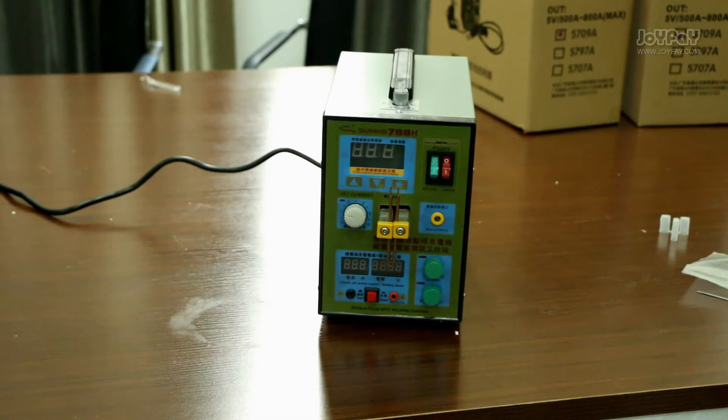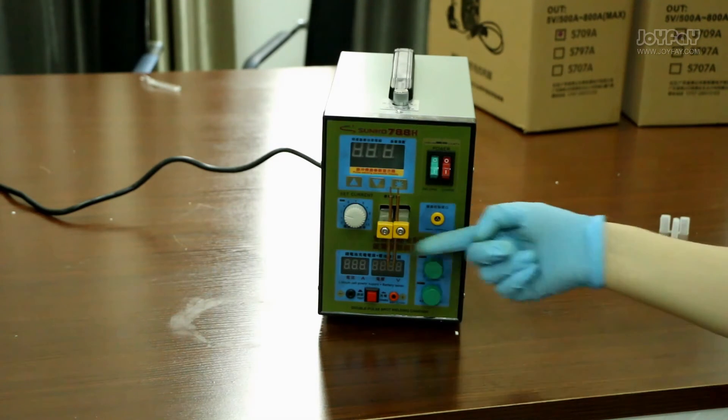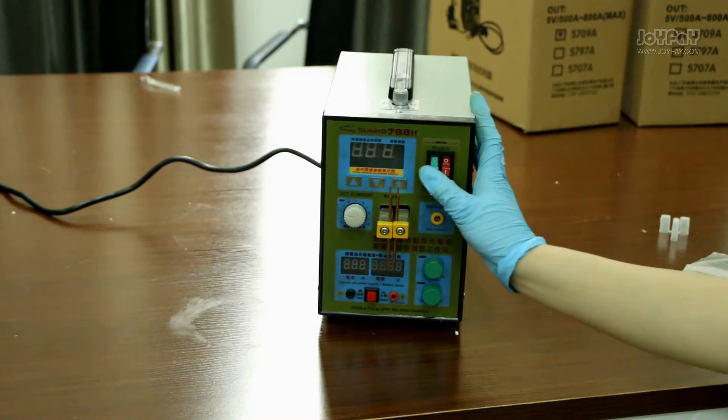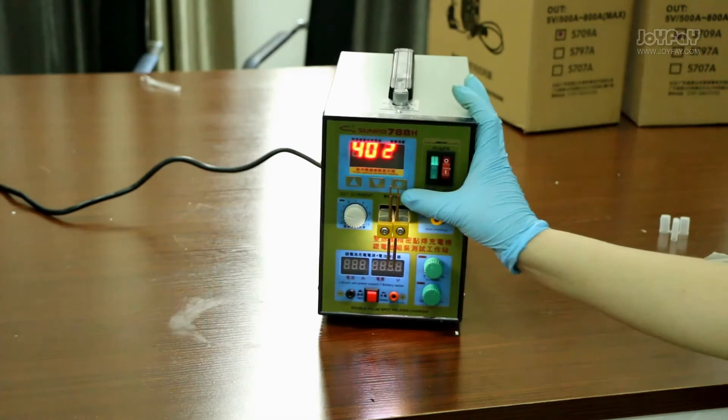When you set up the welding rod, please note that the two welding rods should be parallel to each other, or the machine will be in short circuit. Set up the power center before welding.